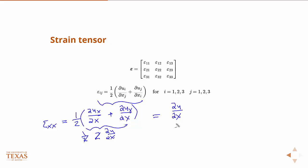And it would be the same for epsilon yy or epsilon zz, and then all the off-diagonal terms you would get these shear strains. All right?